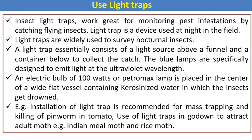The first is the light trap. Pest surveillance through insect traps is one of the biochemical methods of pest management. In this light trap, light is the major source to attract different nocturnal insects — those insects which are active at night. Insect light traps work great for monitoring pest infestation by catching flying insects. This trap is a device used at night in the field, widely used to survey nocturnal insects. A light trap essentially consists of a light source above a funnel and a container below to collect the catch.